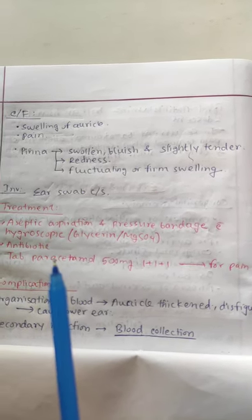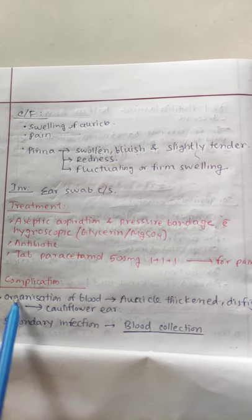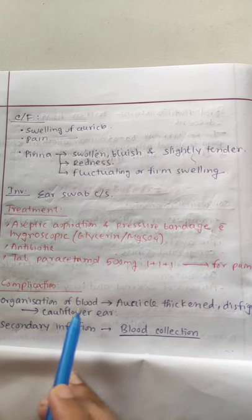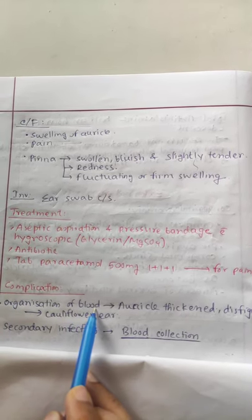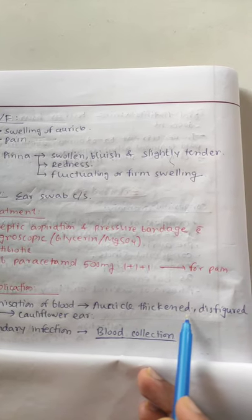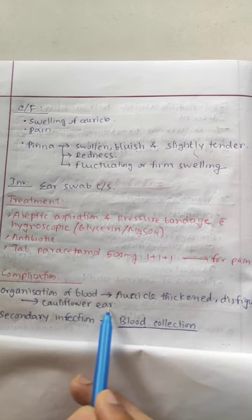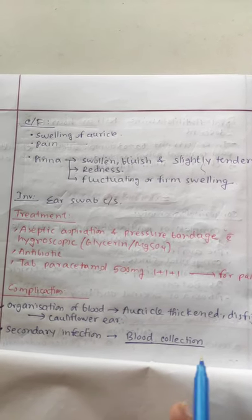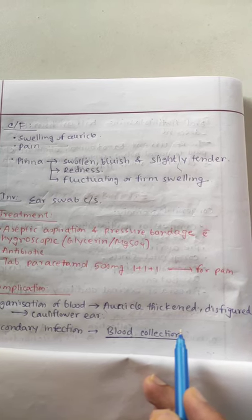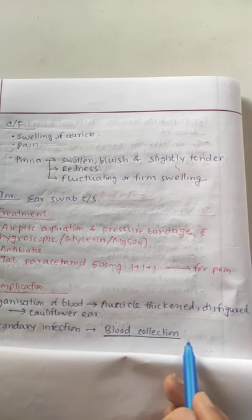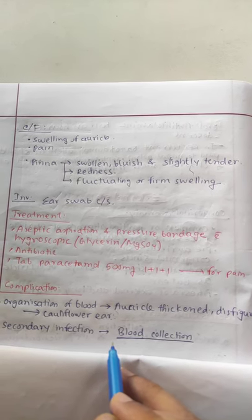Complications of Hematoma Auris: when blood collects, it provides a good medium for bacterial growth. This can lead to organization of the blood, thickening and distortion of the auricle, resulting in cauliflower ear. Secondary bacterial infection may also occur.